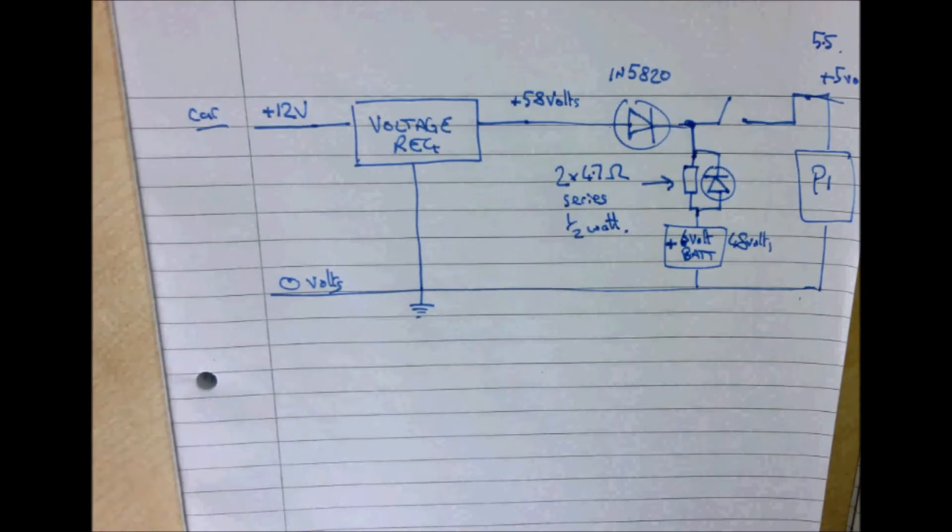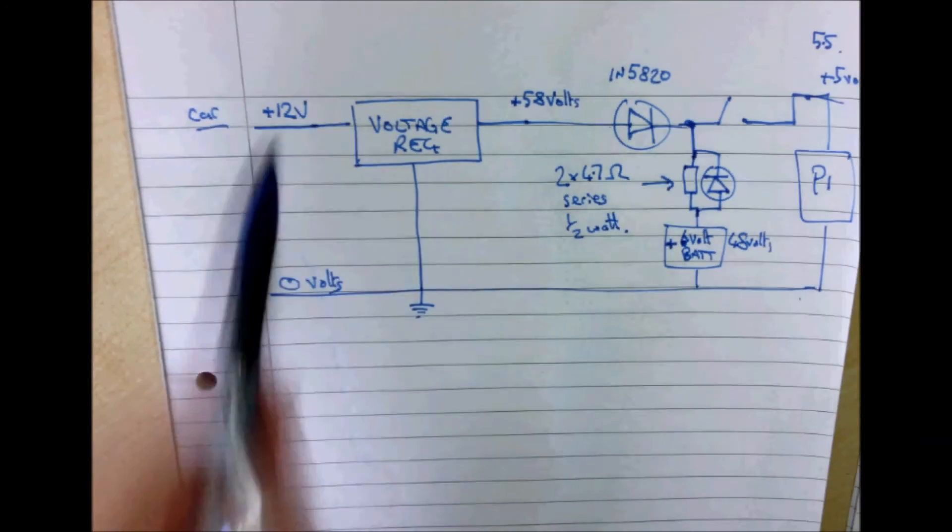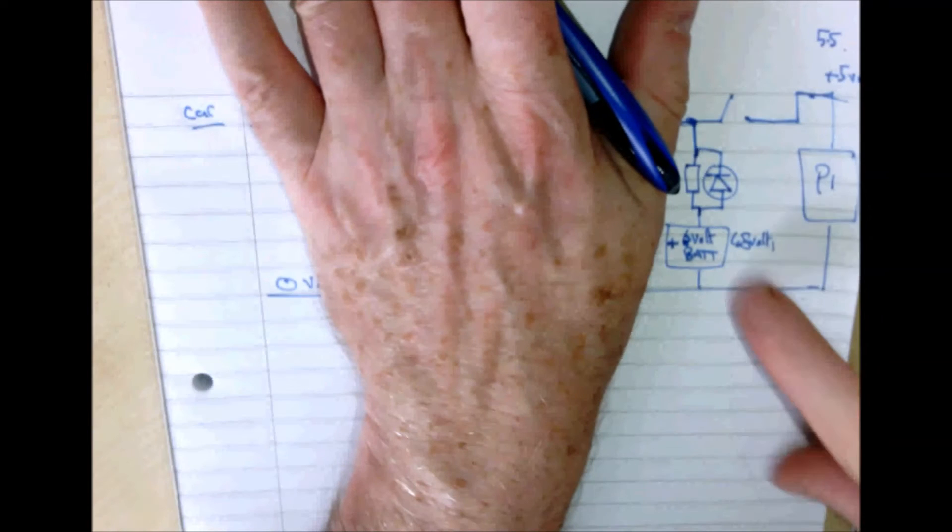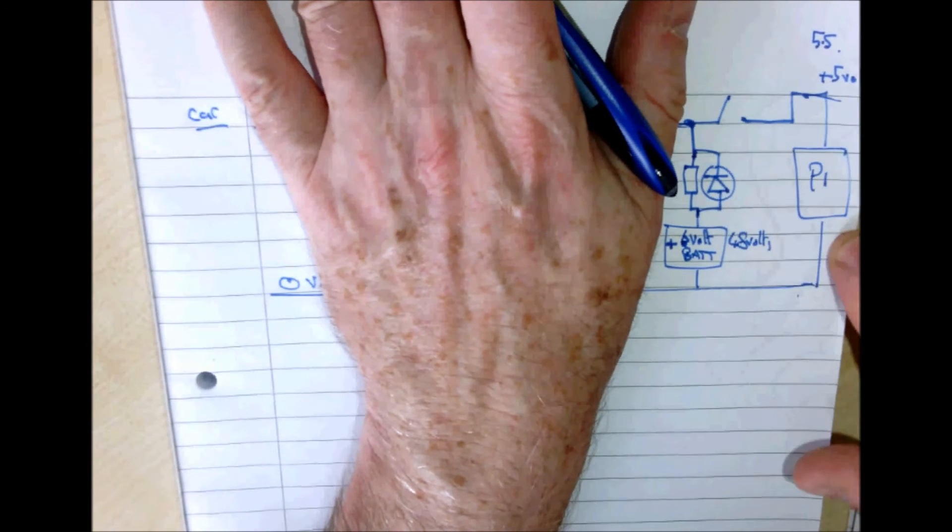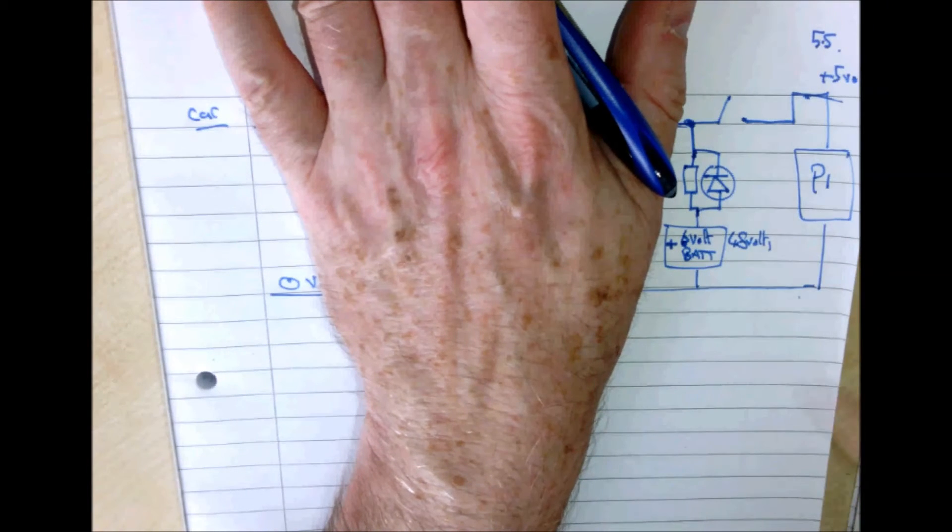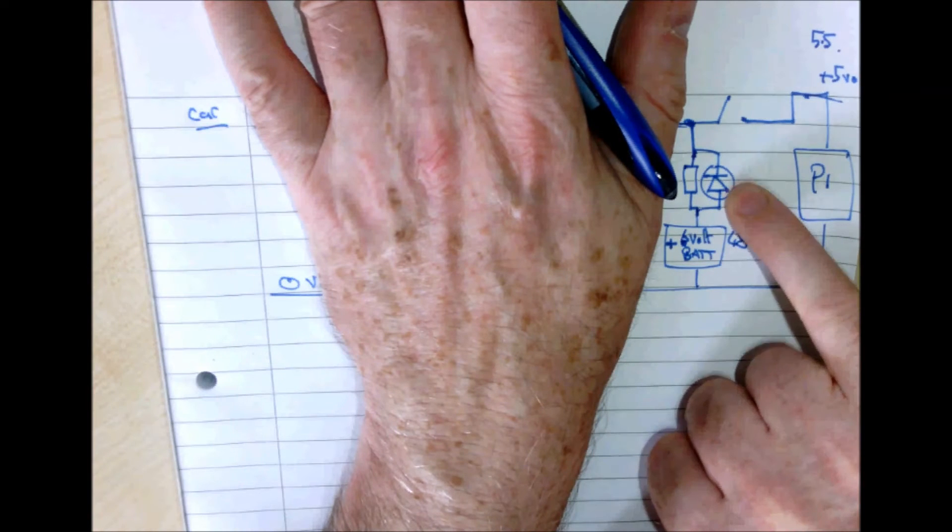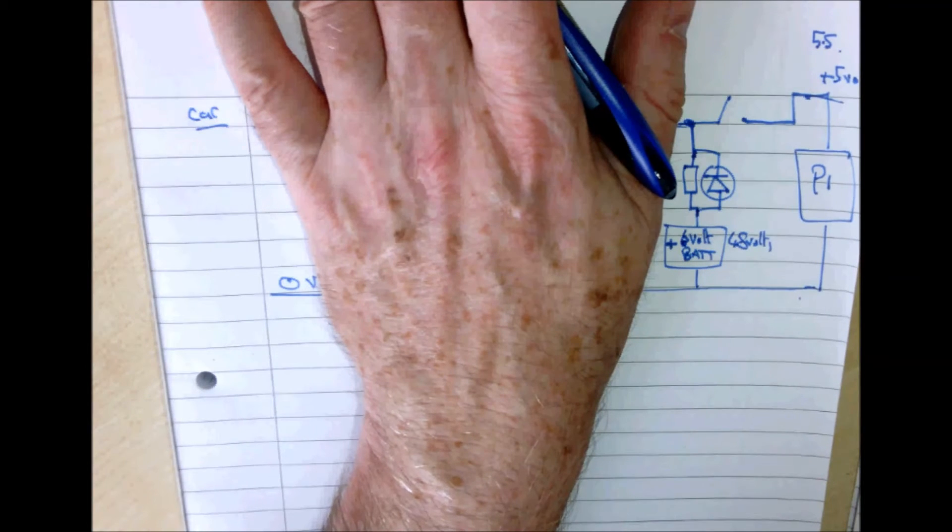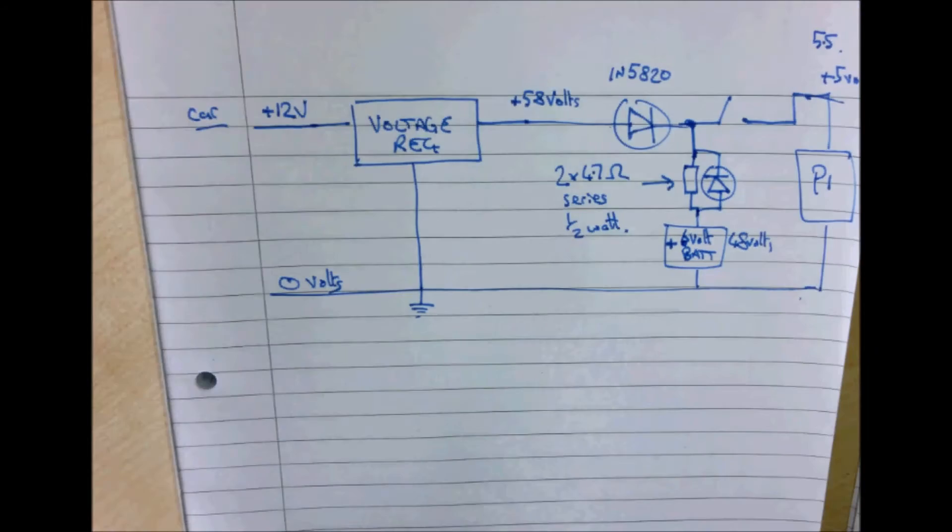So that's our circuit that feeds power to the Pi and it charges the battery. And when this voltage is cut here, when the voltage is cut, then this battery will then feed the Pi with about 4.8, loses about 0.3, maybe 4.5 volts across there, or maybe a little bit more. And the Pi should be happy with that for a few minutes while it shuts down.